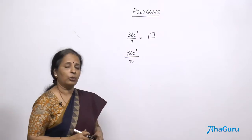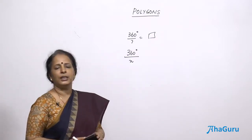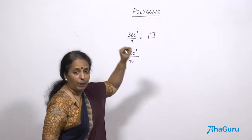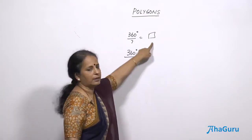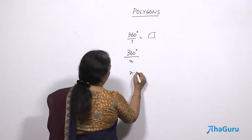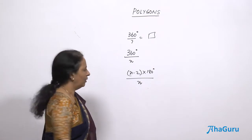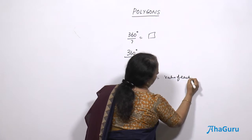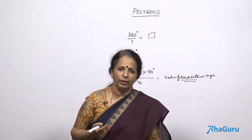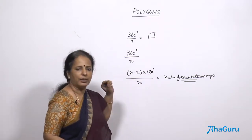For any general n-sided regular figure, each exterior angle is equal to 360 degrees divided by n, where n is the number of sides. So for a heptagon, each exterior angle is 360 by 7. For exterior angles it is very easy. For interior angles, the total is n minus 2 into 180 degrees, divided by n, which gives you the value of each interior angle.